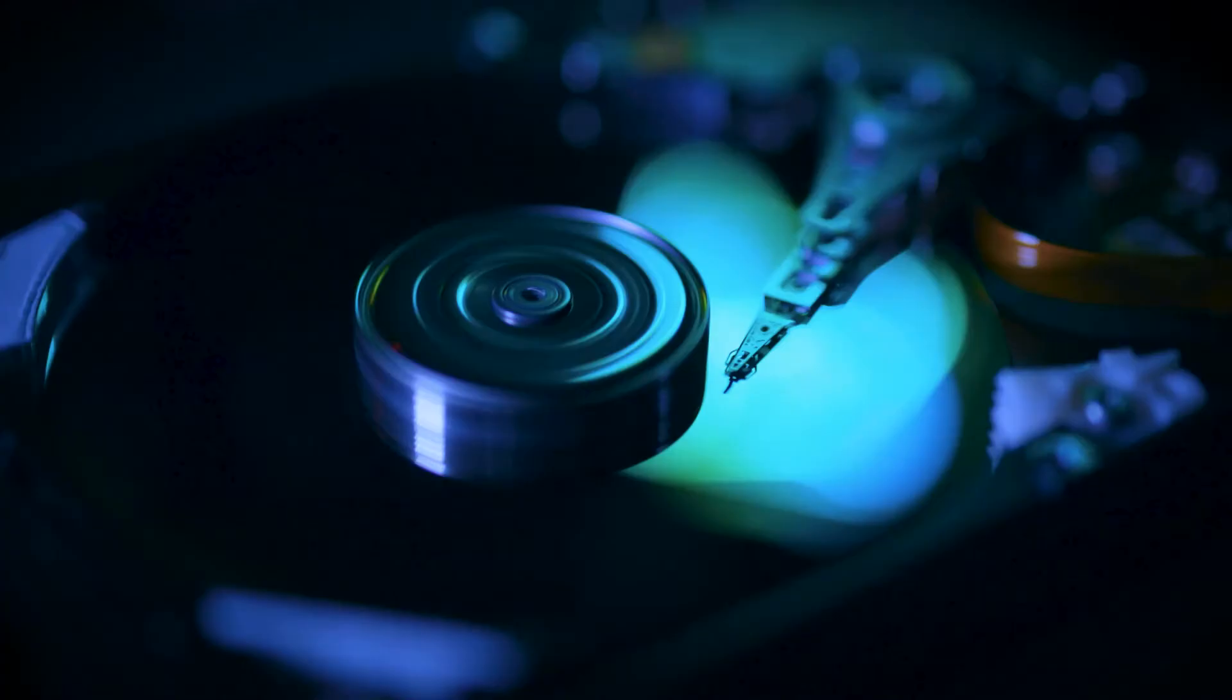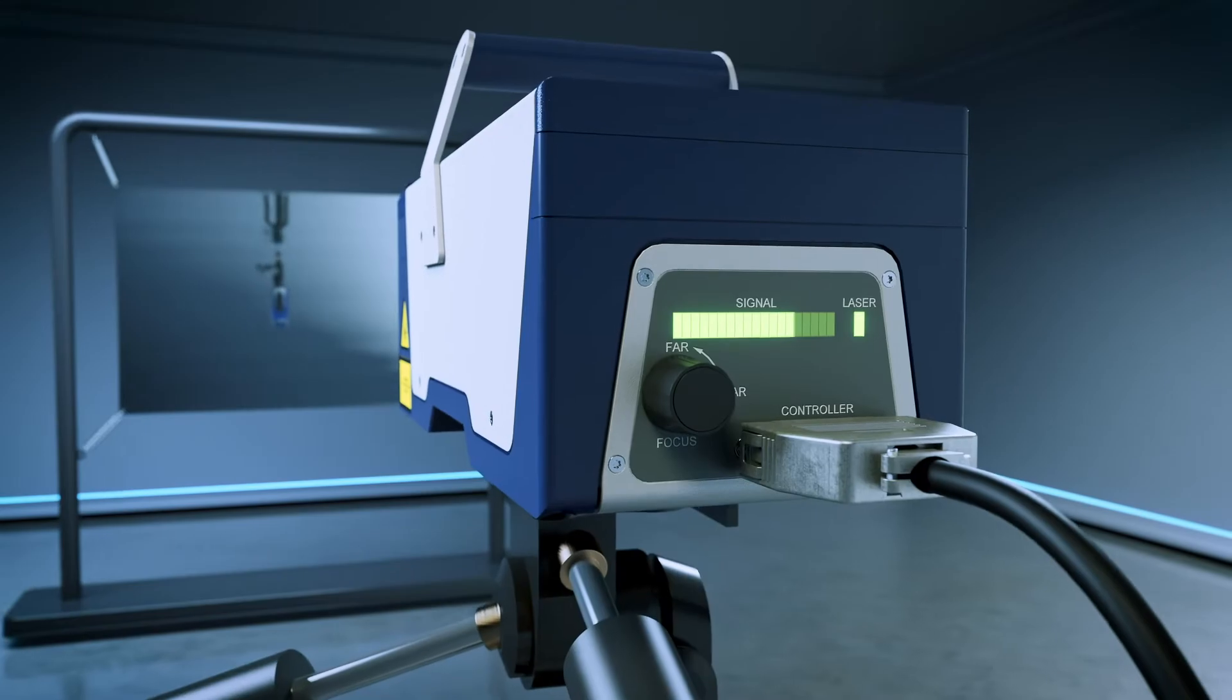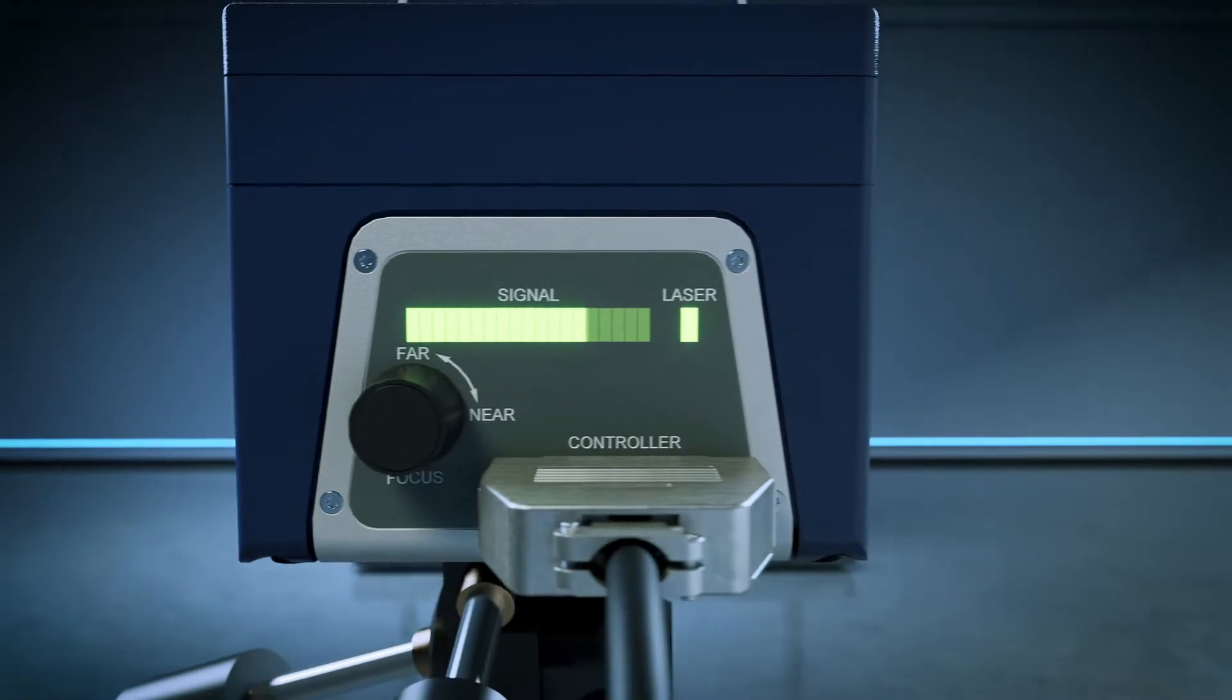The signal quality of a laser vibrometry measurement depends on specific properties of the returned light. The intensity of the return light is the primary measure and is visualized on a signal level indicator.